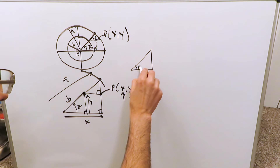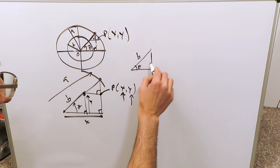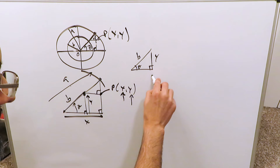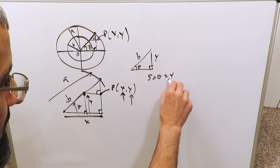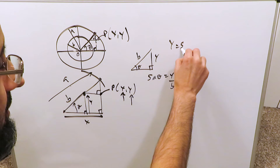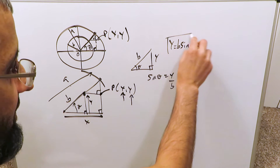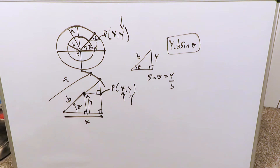When I focus on the small triangle I have a certain angle theta, a certain hypotenuse b, and a y I'm looking at. Sin theta is equal to y over b, so y is equal to b·sin(θ). That's your first parametric equation, derived.